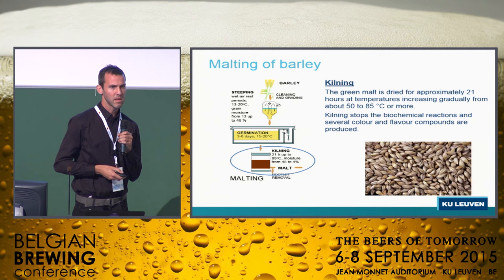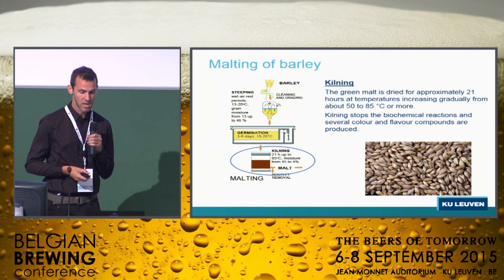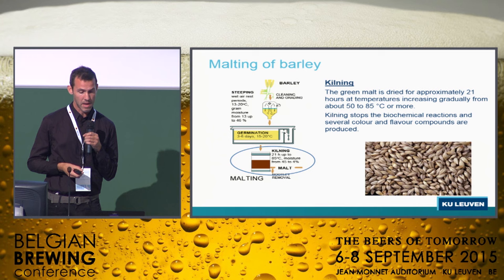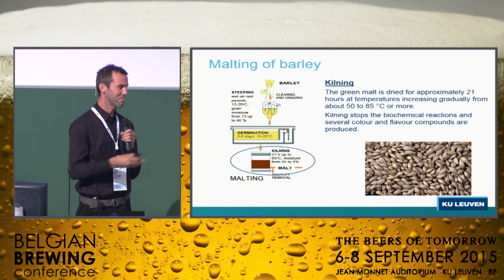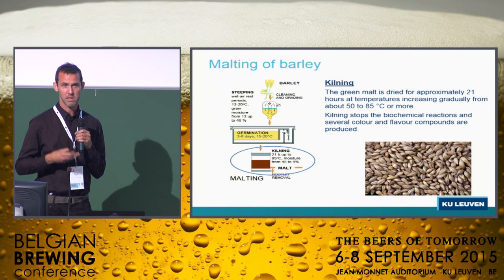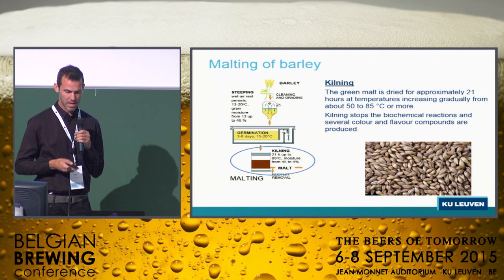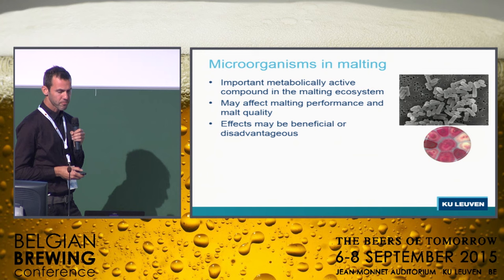The last step is kilning. Kilning is actually the drying step for about 21 hours. Temperature is increasing from 50 up to 85 degrees or even more, until a water content of about 4% is reached. The kilning stops the biochemical reactions. Several colour and flavour compounds are produced during this step.